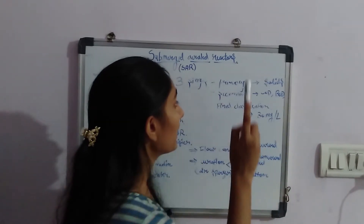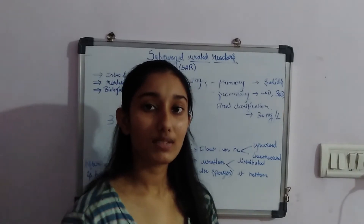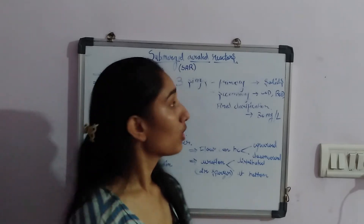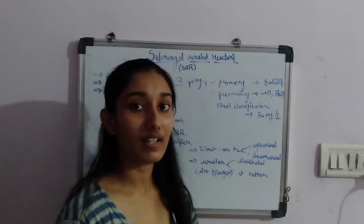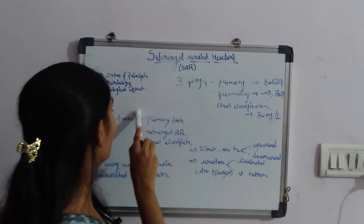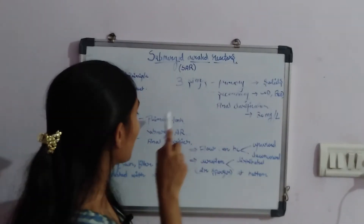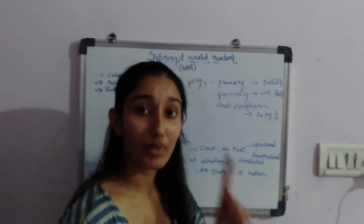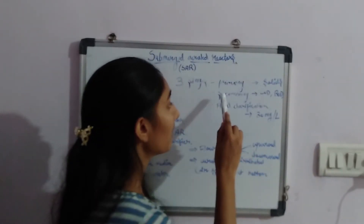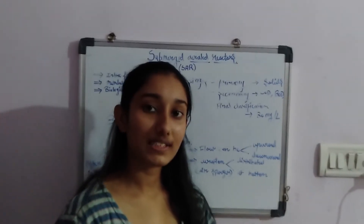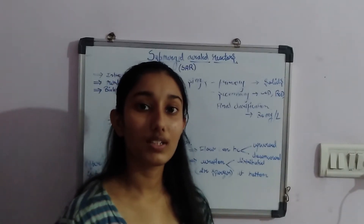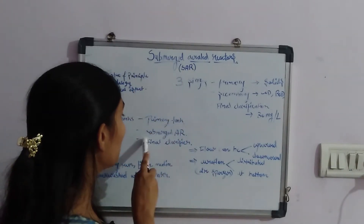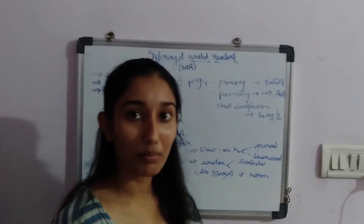In primary clarification, all large solids are removed from the water. The submerged aerated reactor system has 3 tanks total. The primary tank removes solids. The secondary stage involves removal of COD and BOD, which is the whole microorganism process, and that tank is the main submerged aerated reactor tank.